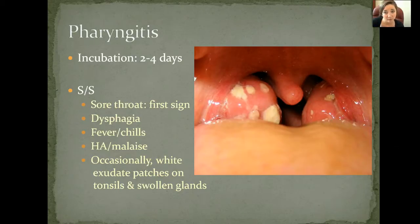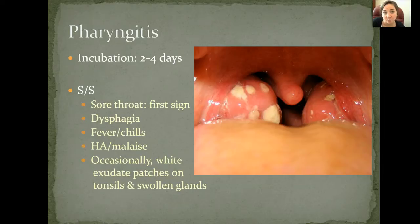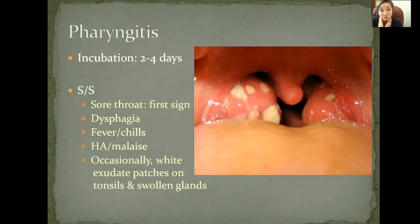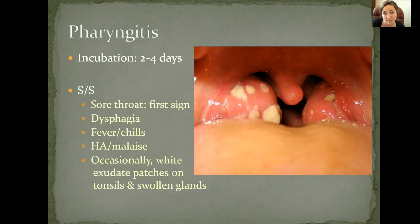A lot of times, especially when strep is involved, you're going to see white patches on the back of the throat. That shows you have some exudate or pus forming on top of the tonsils. You'll also notice swollen glands — the doctor will palpate externally in the neck area where lymph nodes are located. When you use a tongue depressor and say 'ah,' that's when you can see the white patches and observe the tonsils and glands swollen from the inside, which is what makes swallowing so difficult.